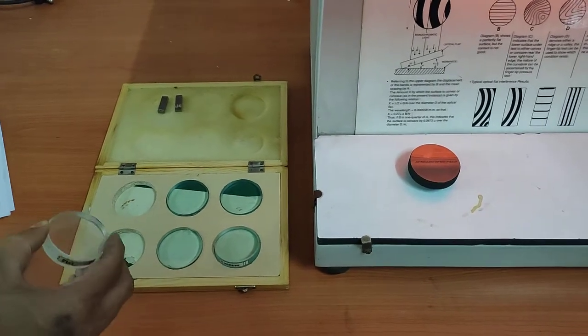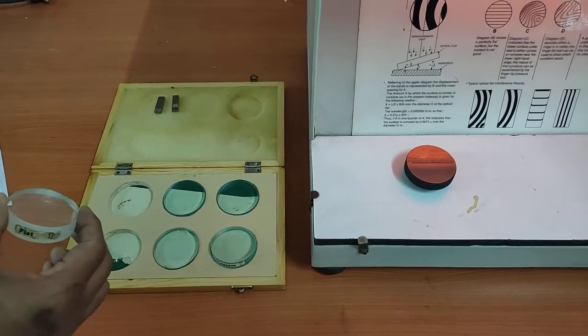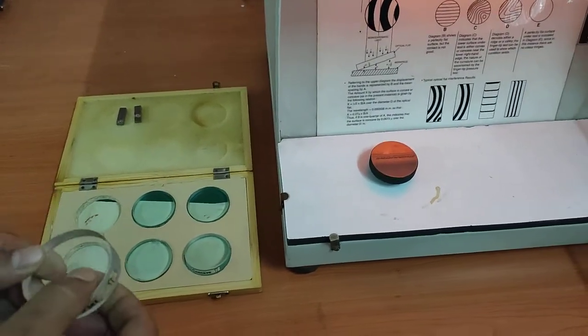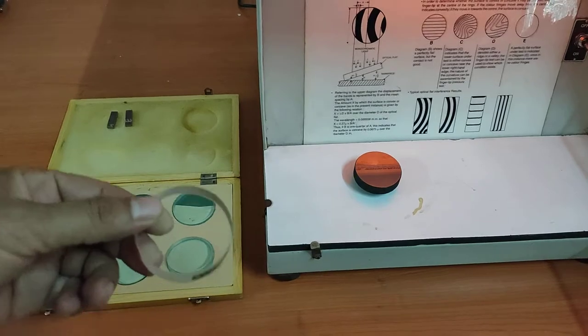Now an optical flat is a circular piece of optical glass with two plane faces that are parallel and flat.